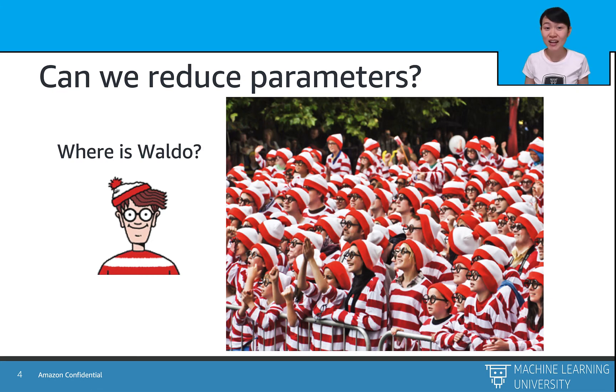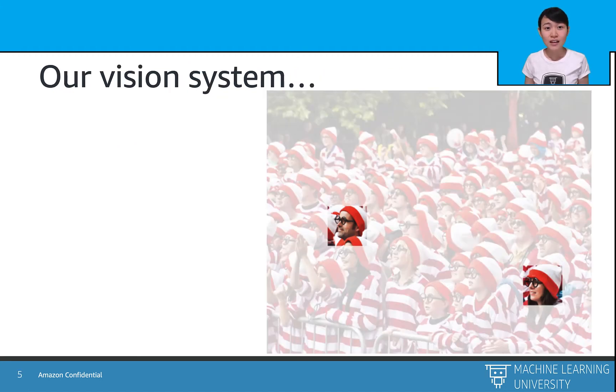We have an object detection task and we want to find a Waldo in the given image. If we look at the picture of Waldo here, there are a lot of Waldos in the picture. And to recognize the Waldo, it doesn't really depend on where in the picture this guy is. And also, it doesn't really depend very much on Waldo's neighbors.